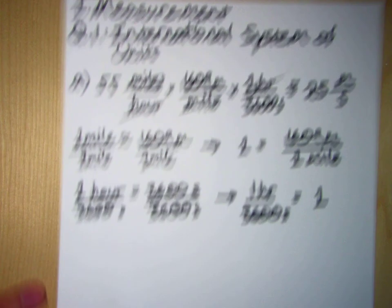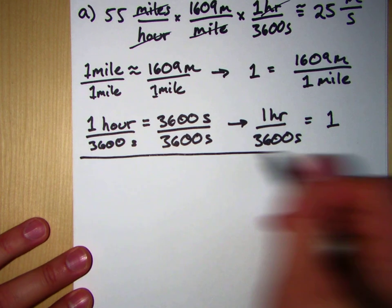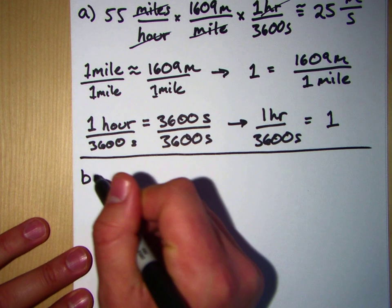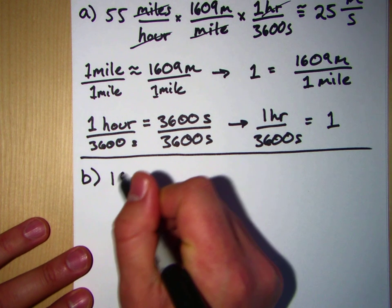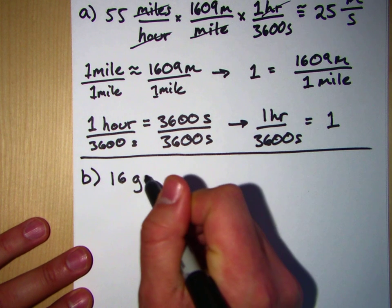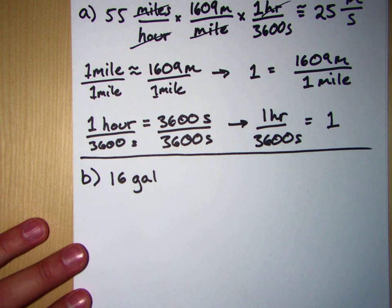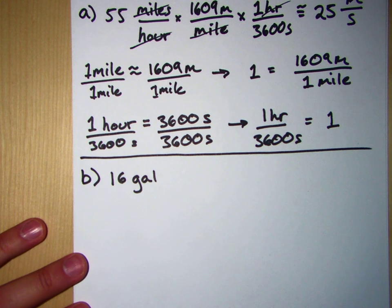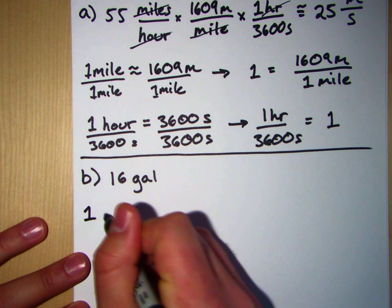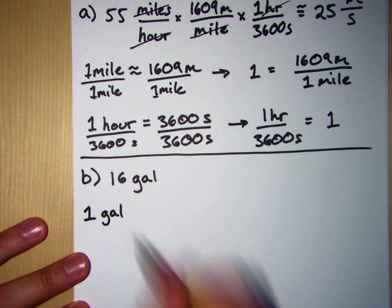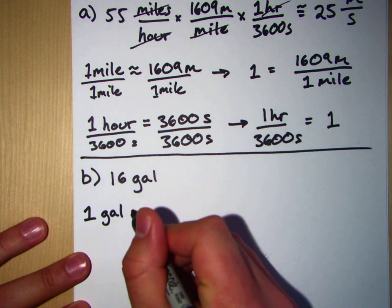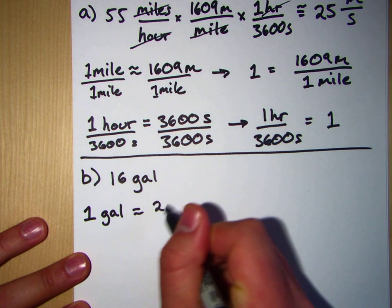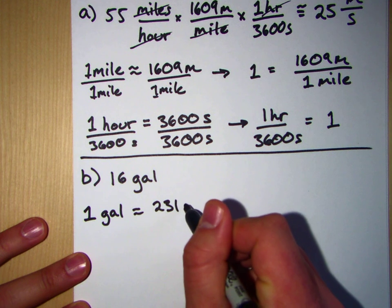Okay, let's take a look at part B here. Part B, we want to convert 16 gallons of water into the equivalent in cubic centimeters. Well, we're going to do this in two steps. A gallon, as it turns out, is about equal to 231 cubic inches.